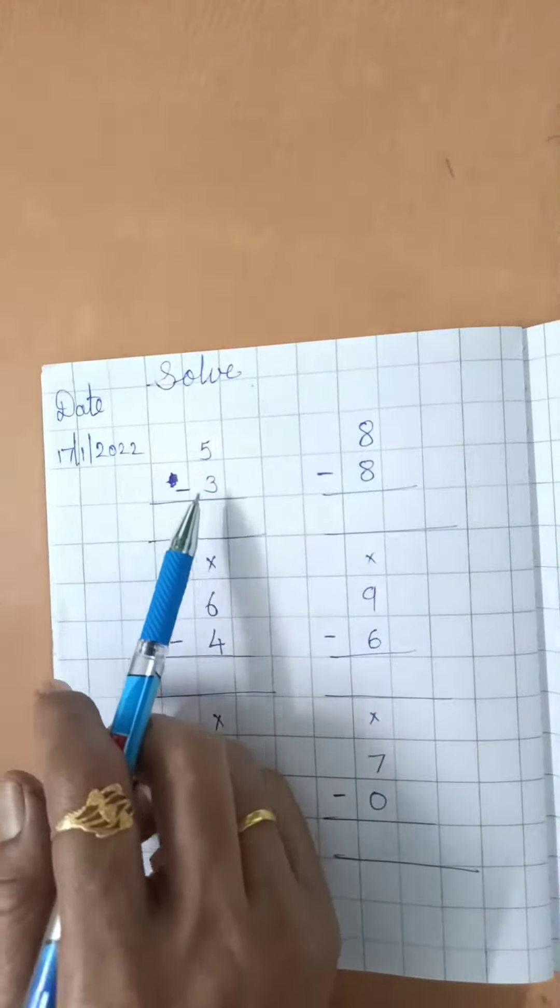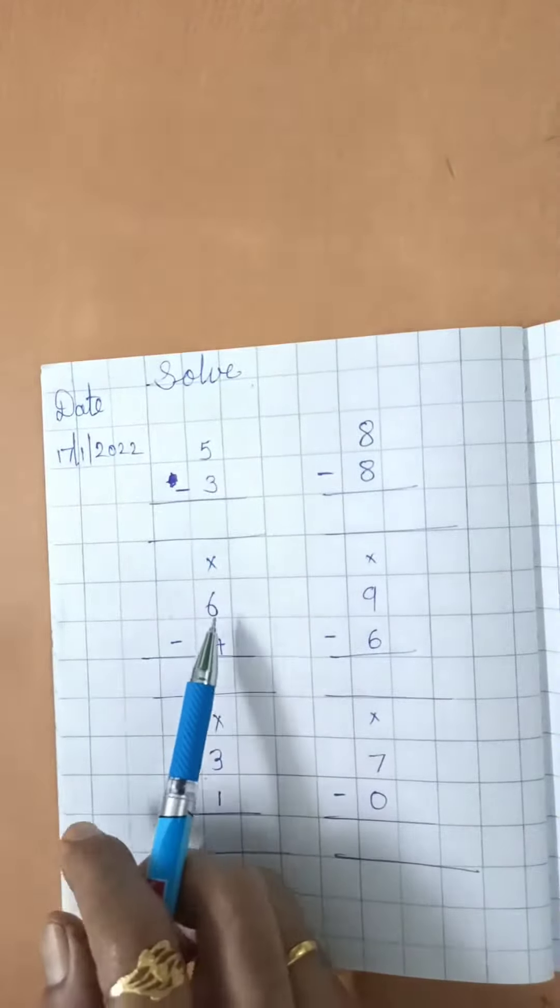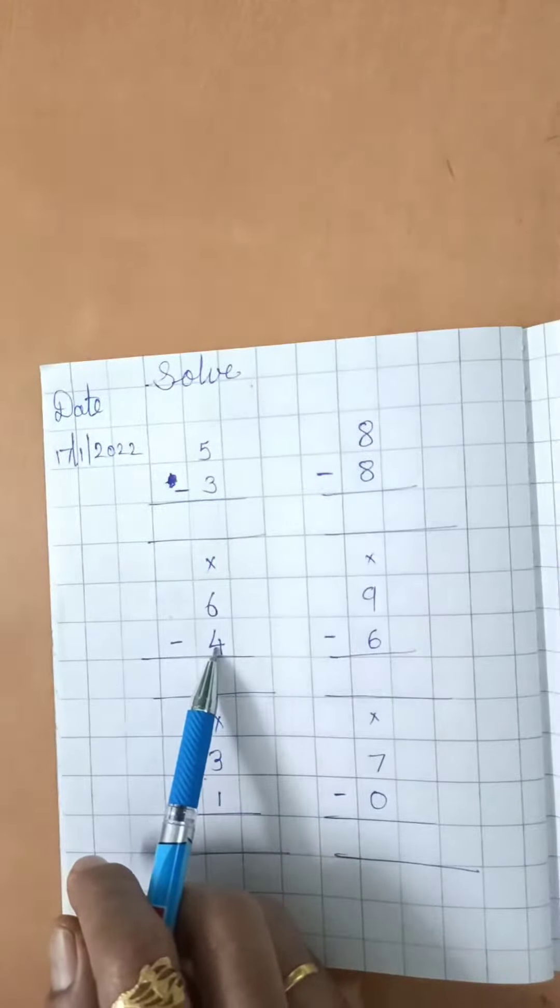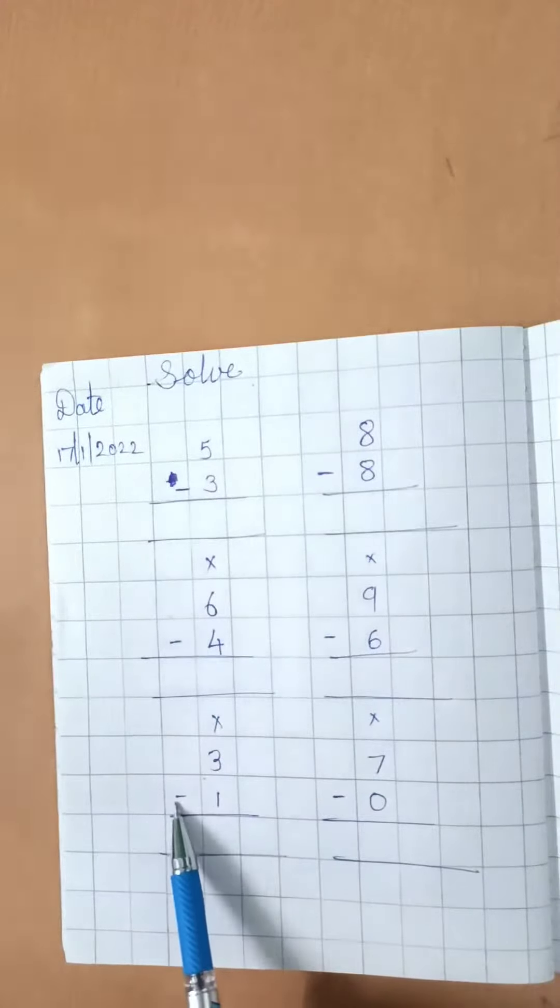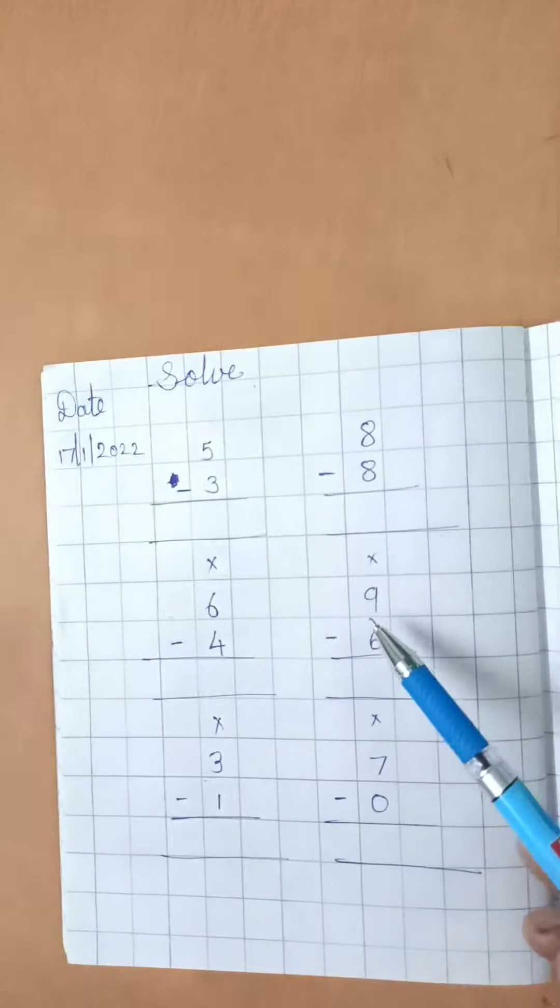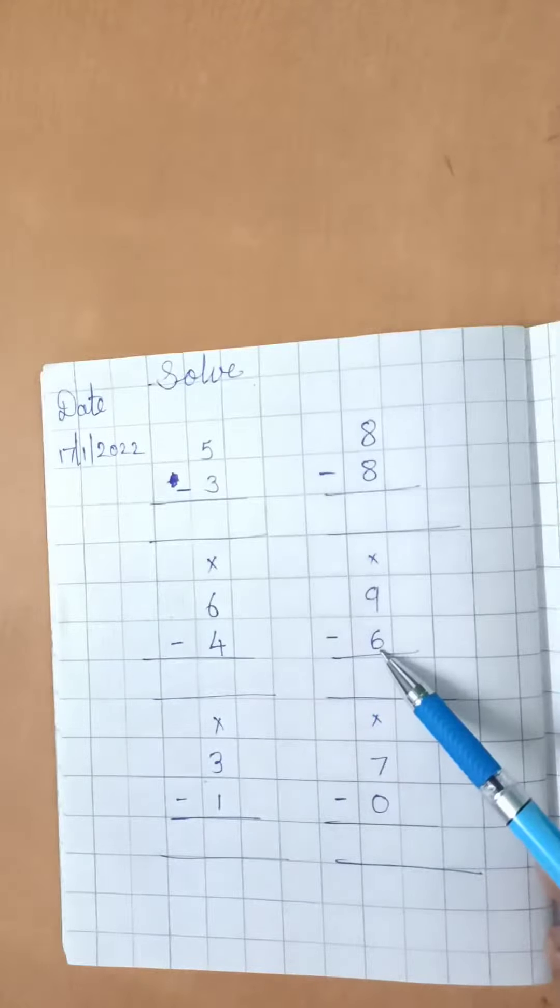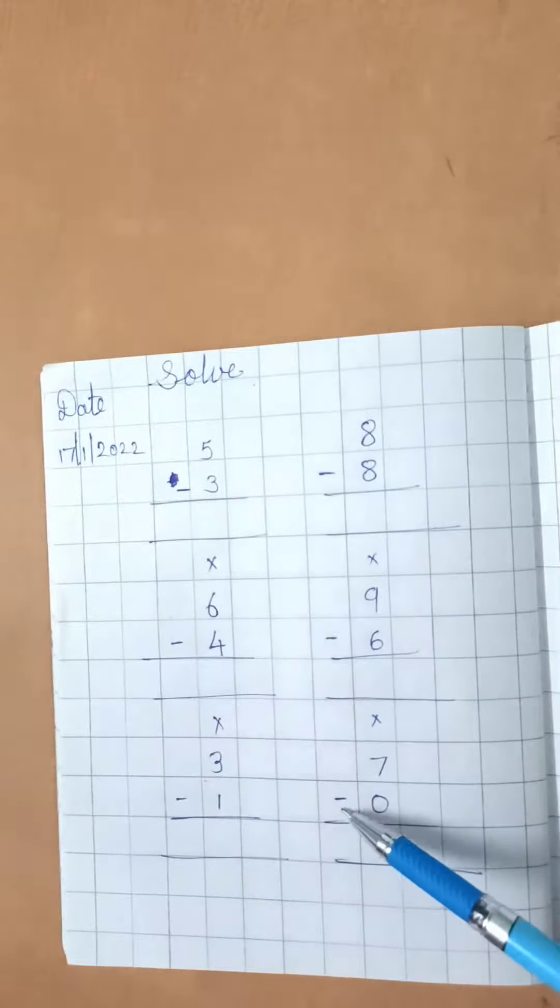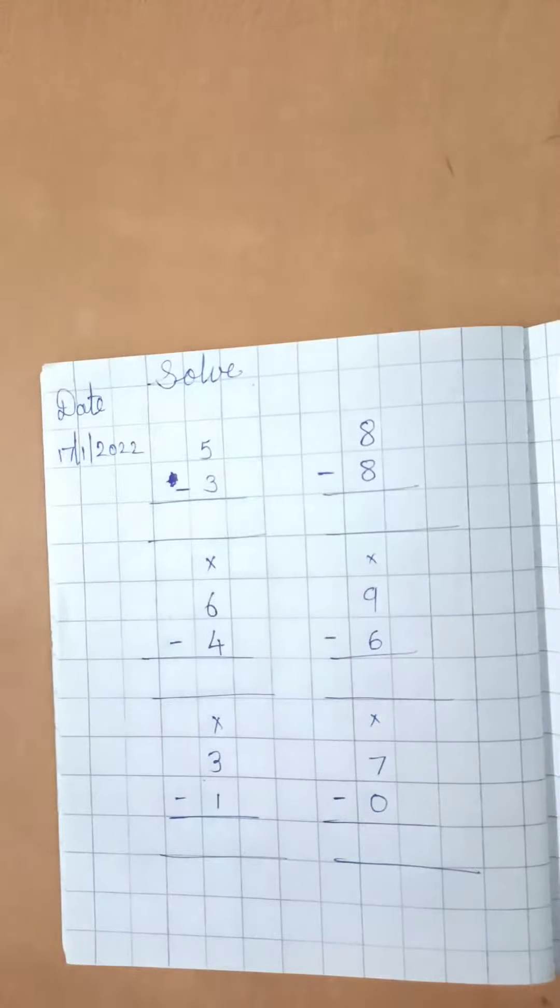So, 5 minus 3, 6 minus 4, 3 minus 1, 8 minus 8, 9 minus 6, 7 minus 0, okay.